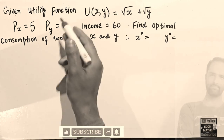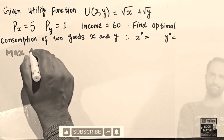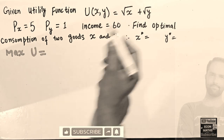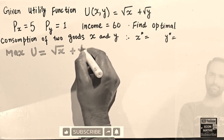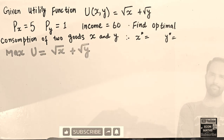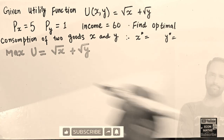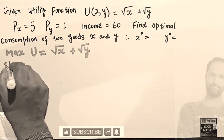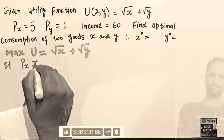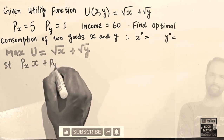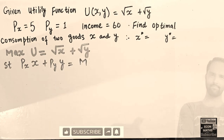We want to maximize our utility function u = √x + √y, subject to the budget constraint. The budget constraint is: price of x times units of x plus price of y times units of y should equal total income.